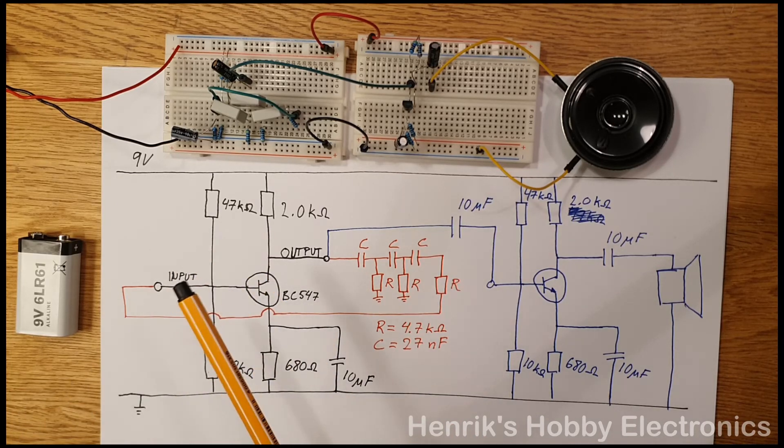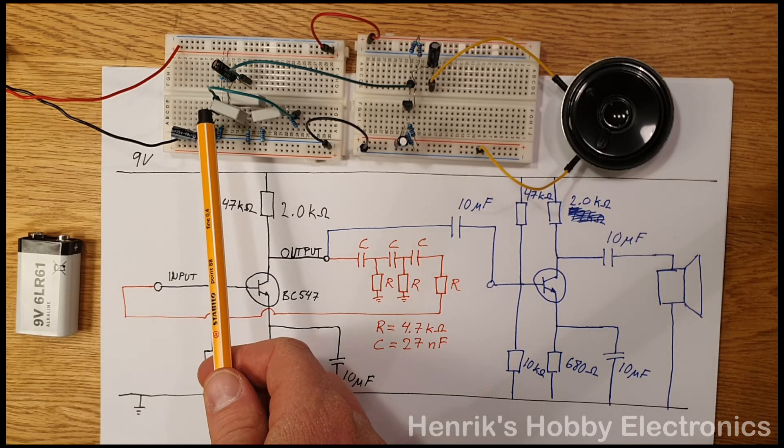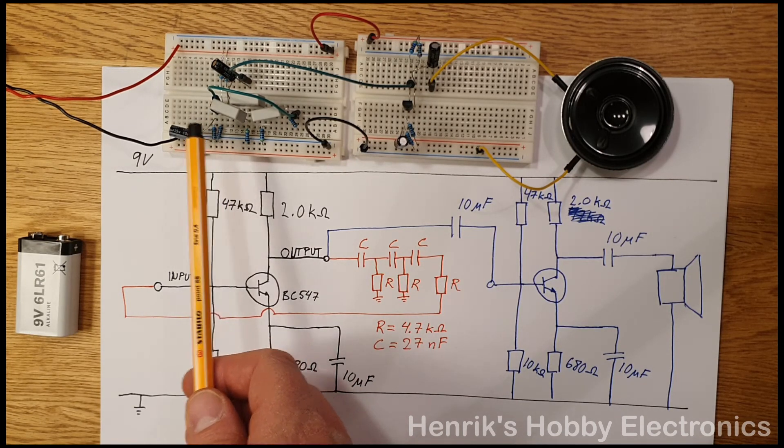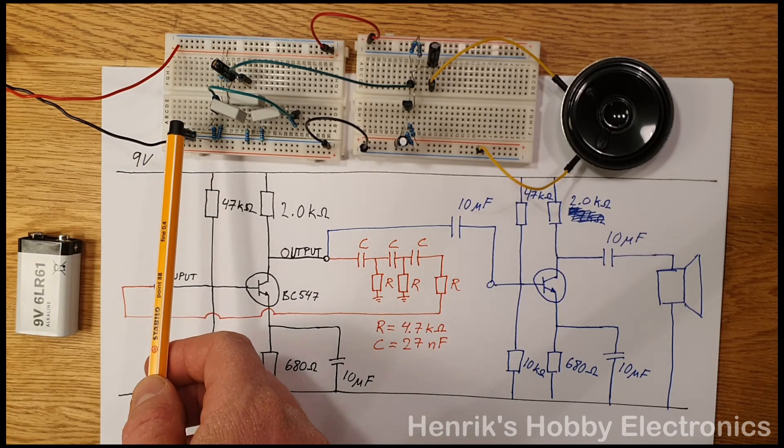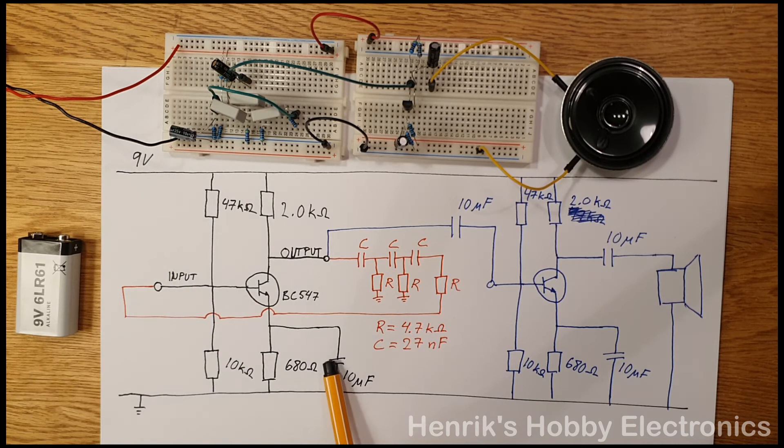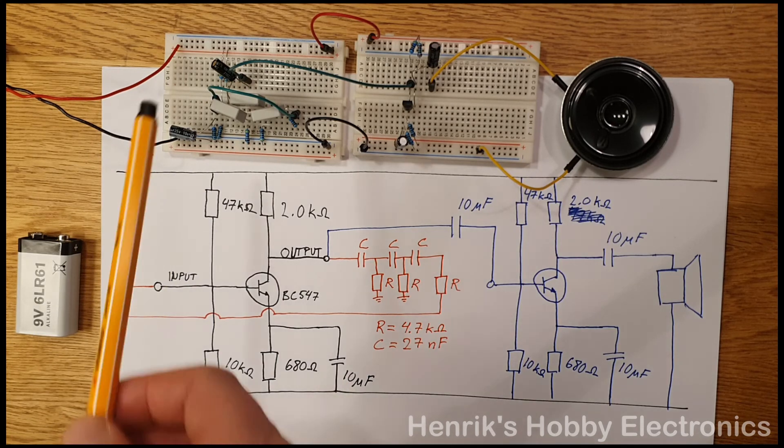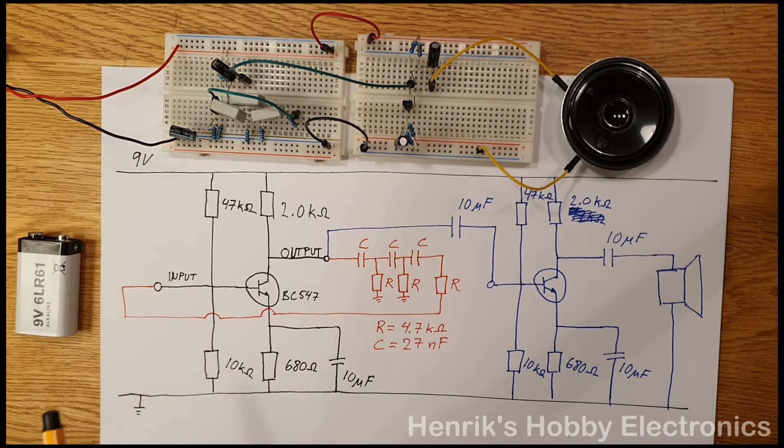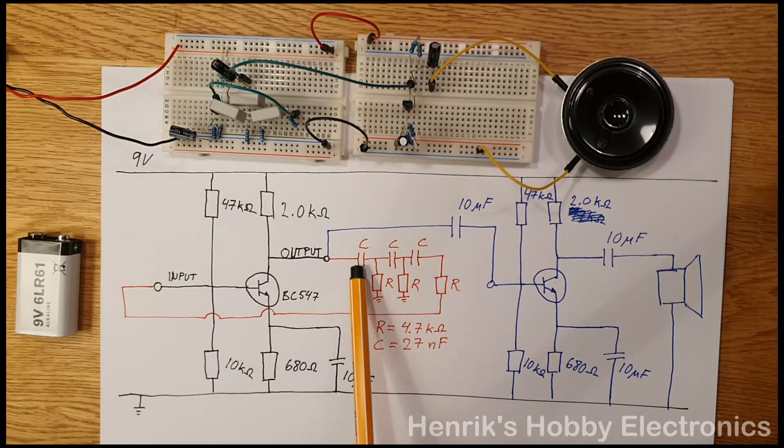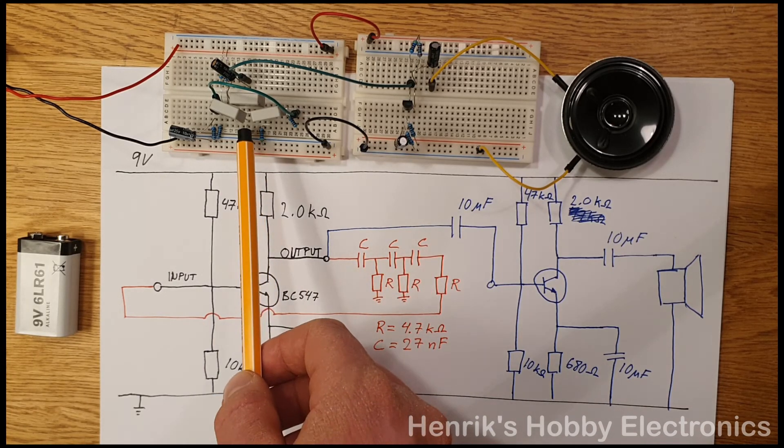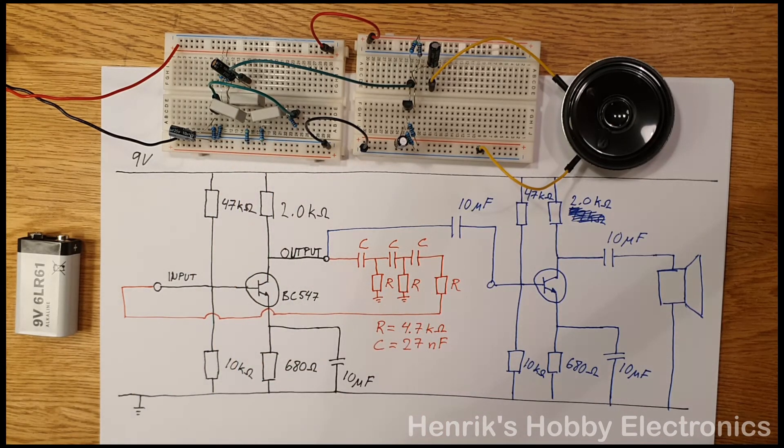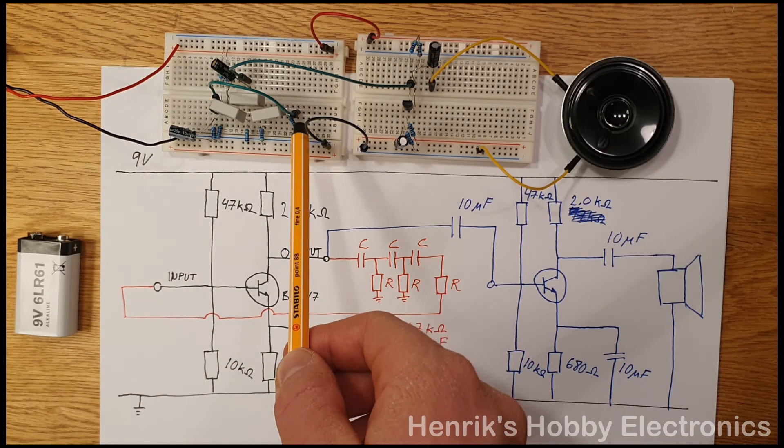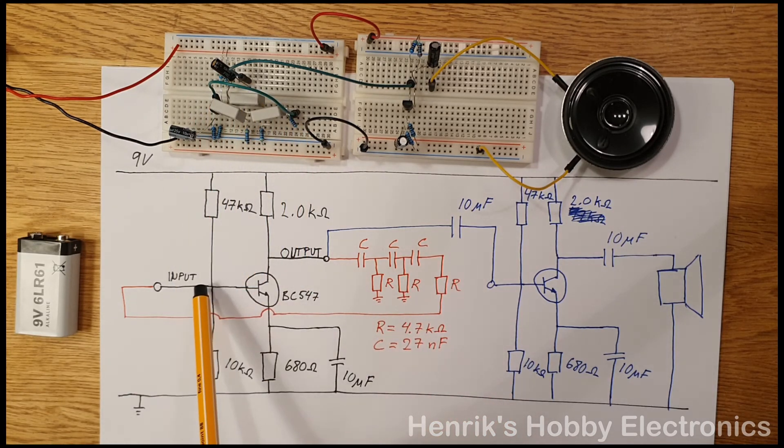Now on the breadboard you have the transistor here for the first amplifier and you have these four resistors associated with that one. Also this capacitor here is the same capacitor that's down here. Here you have the DC blocking capacitor on the output. Here you have the three capacitors shown here and then you have the three resistors here. The feedback is taken after this resistor all the way back to the base of the transistor.